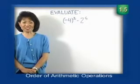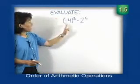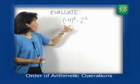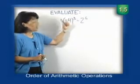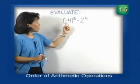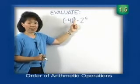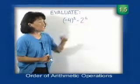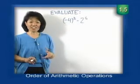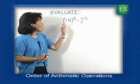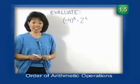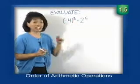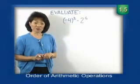We're ready for our next problem. We're going to evaluate negative 4 to the third minus 2 to the sixth power. Remember, parentheses are very important because when a number is within parentheses, it becomes the entire base — so negative 4 is raised to the third power. On the other hand, since there are no parentheses around the 2, it is the base being raised to the sixth power. Our order of operations tells us to first simplify parentheses, but these parentheses are just indicating that negative 4 is the base.